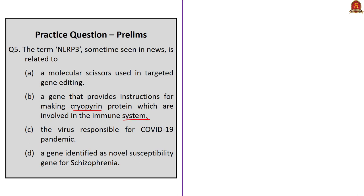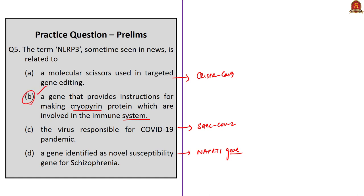The correct answer is option B: a gene that provides instructions for making cryopyrin protein involved in the immune system. Option A is about CRISPR-Cas9. Option C is about SARS-CoV-2, the virus responsible for the COVID-19 pandemic. Option D is about the NAPRT1 gene — the nicotinate phosphoribosyl transferase gene — identified as a novel susceptibility gene for schizophrenia.